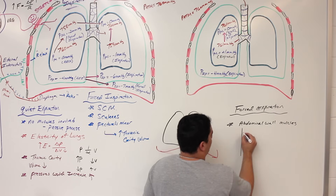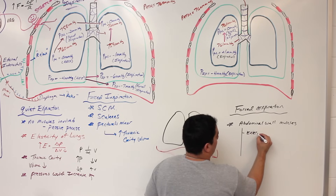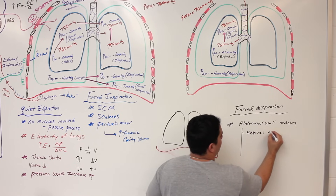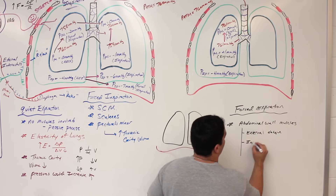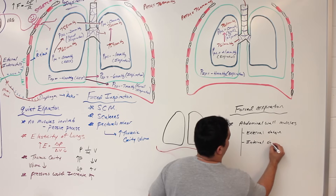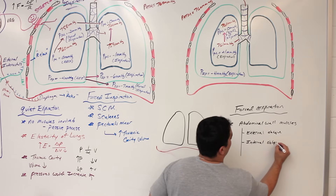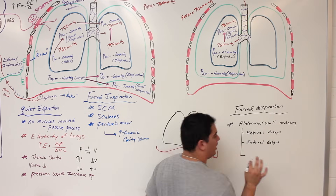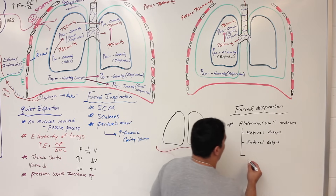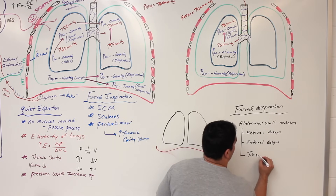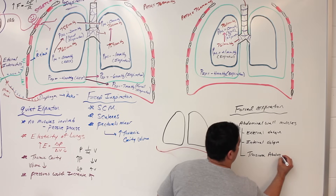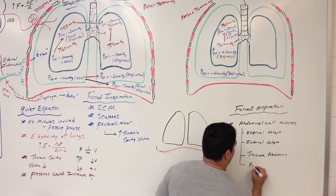The abdominal wall muscles involved include the external oblique, internal oblique, transverse abdominus, and to a lesser degree the rectus abdominus.